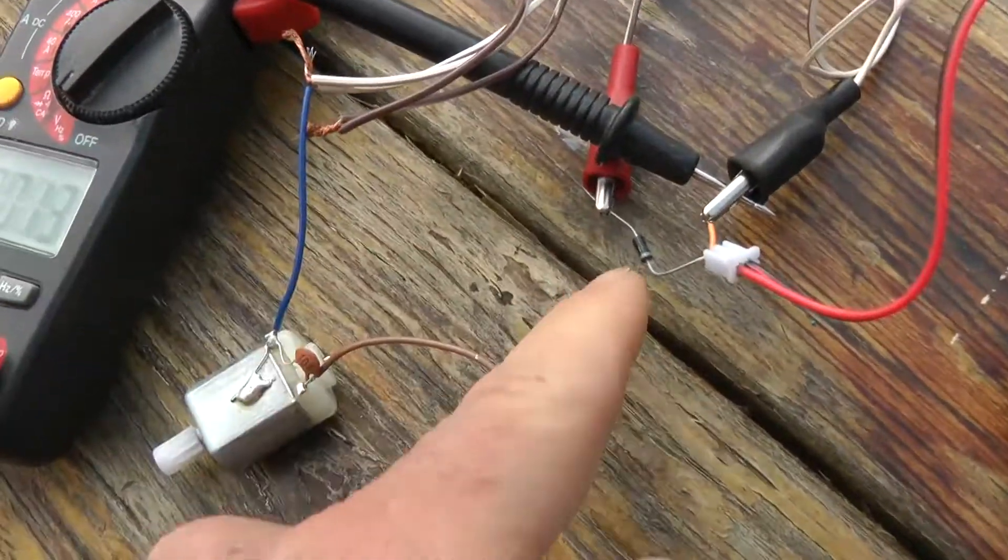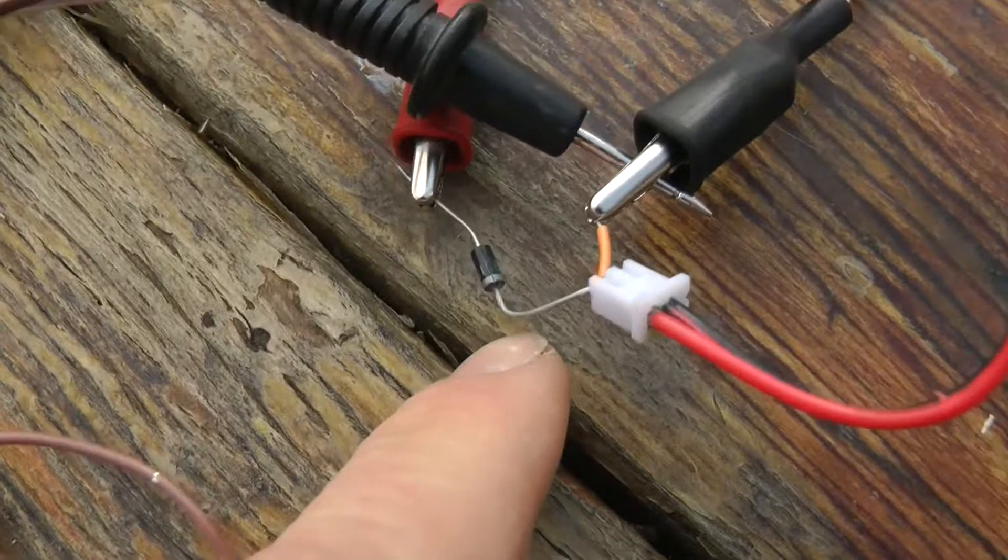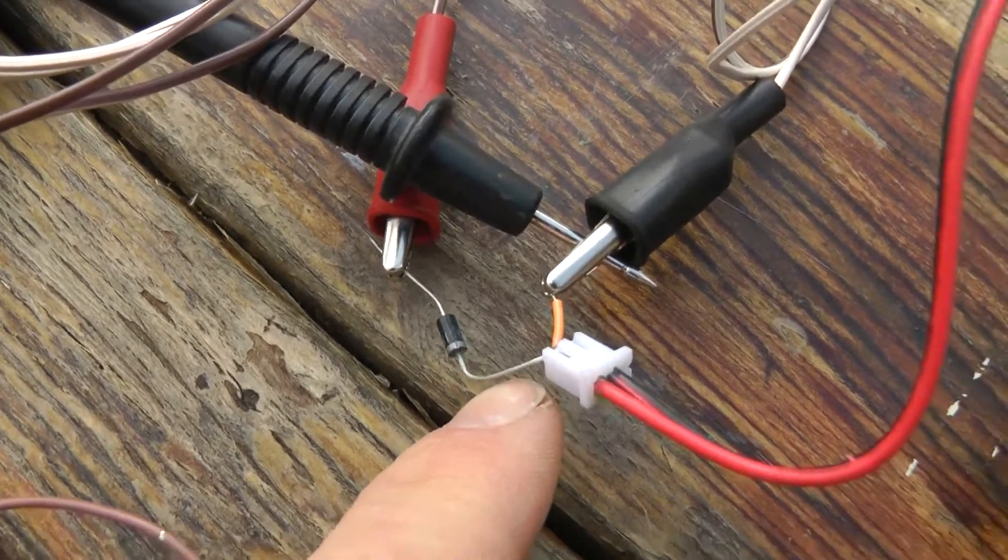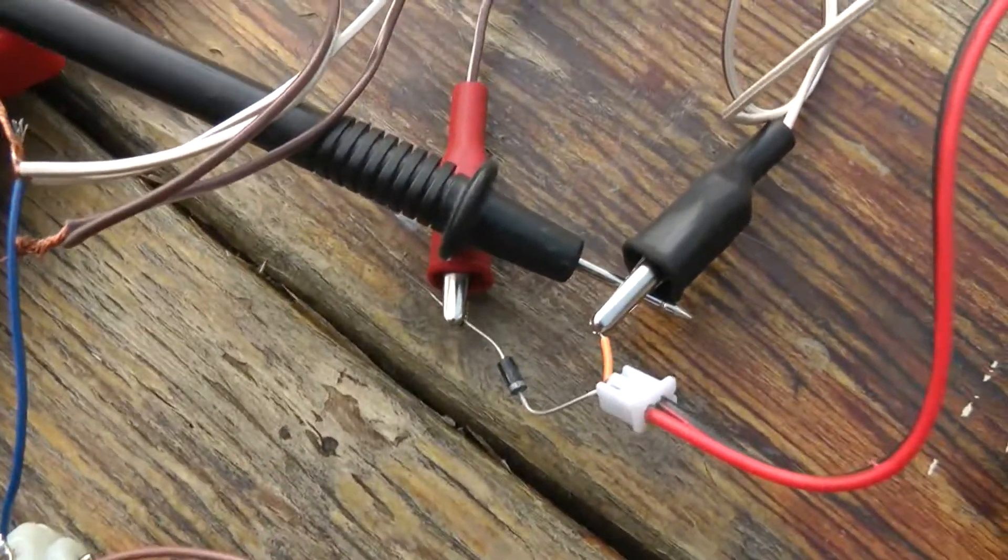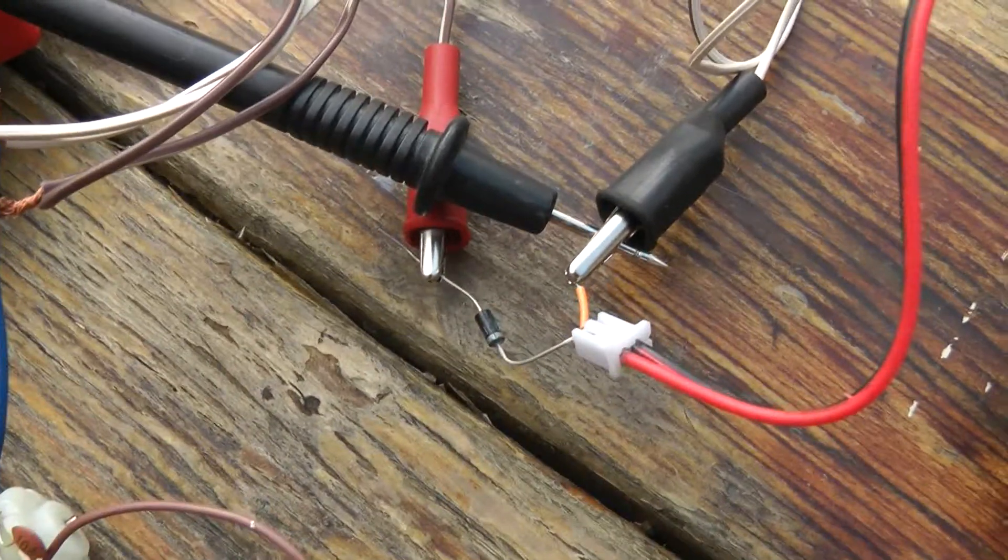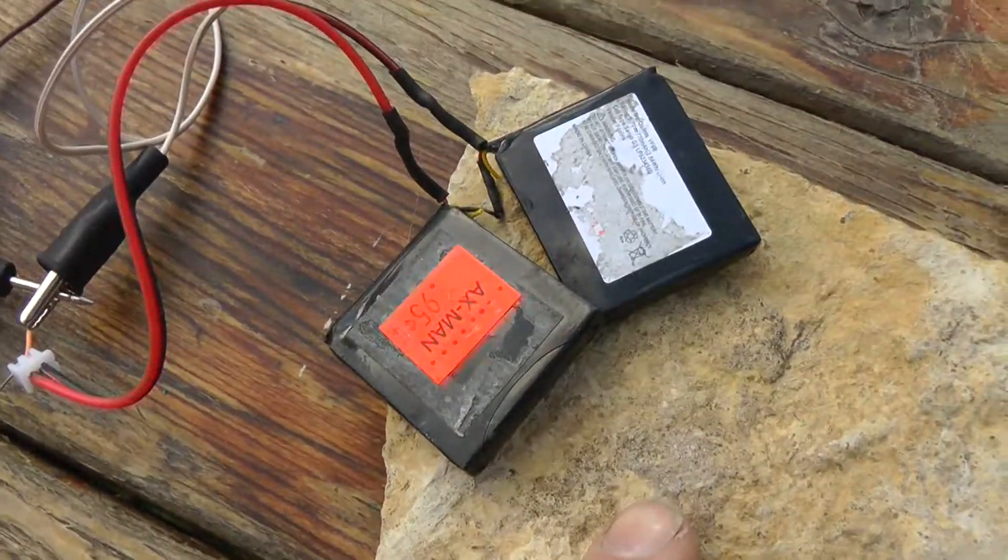It came with this free gift, this diode, which will prevent the power from going back into the solar panel once the voltage drops below the voltage in the battery.